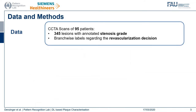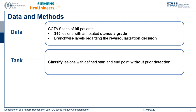To this end, we use a data collection consisting of 95 patients. These patients have in total 345 lesions annotated with stenosis degree in a binarized fashion — below and above 50% narrowing — which is the clinically relevant cutoff value. We also have branch-wise labels on main branch level regarding whether the main branch was revascularized or not. We propagate those revascularization labels to the most severe stenosis in order to get lesion-wise labels. Our task is to classify those lesions with a defined start and end point without prior detection.